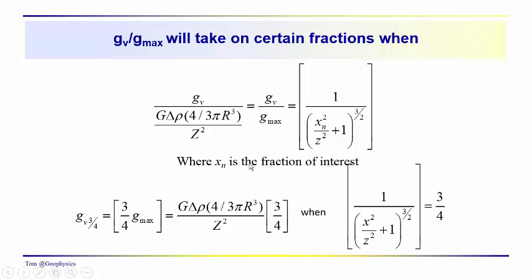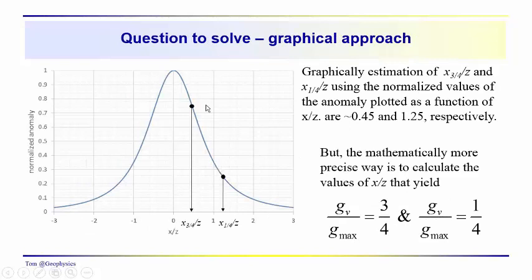And x of n in this case just refers to the position at an arbitrary ratio that you happen to be interested in. In this example, in the three quarters gmax position, we're going to be solving the shape term for the value of x over z, which yields a value of, in the normalized plot, of three quarters.